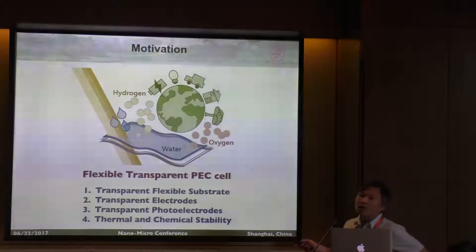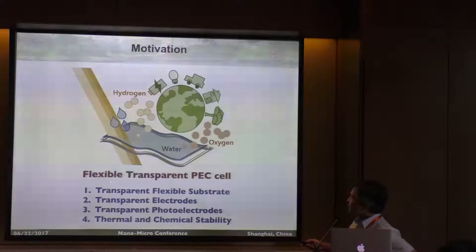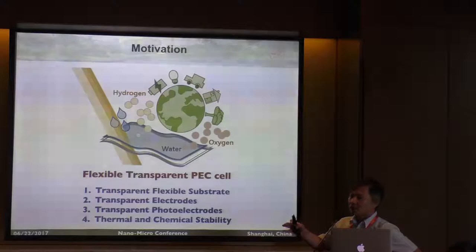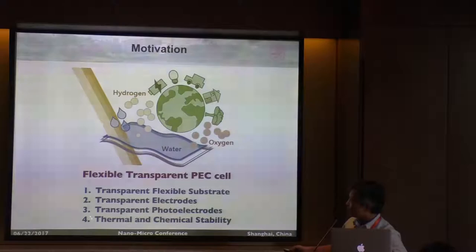To build up a flexible, transparent photoelectrochemical cell, there are four requirements we need to pay attention to. First, because you want it to be flexible and transparent, you need a substrate which is also transparent and flexible. Then you need to have transparent electrodes on top, and transparent photoelectrodes on top. All of these have to show thermal and chemical stability. You need a structure which can meet all these requirements.